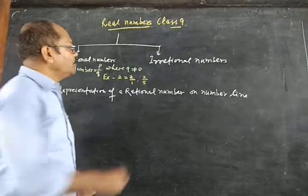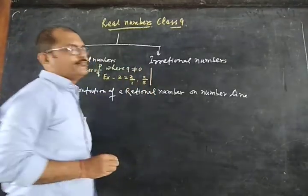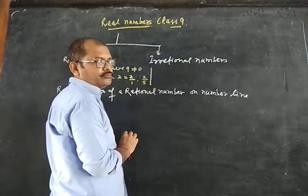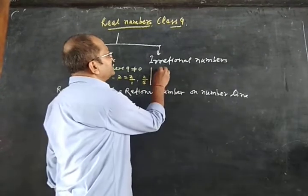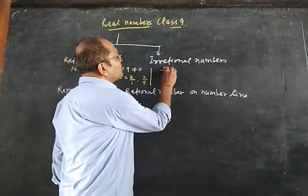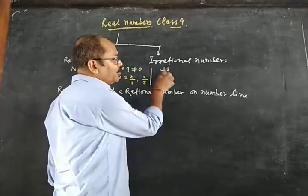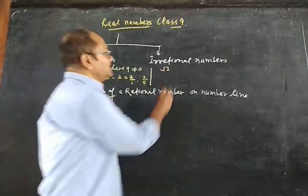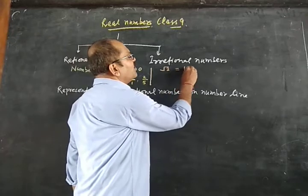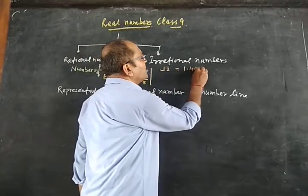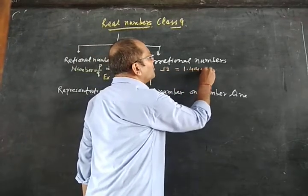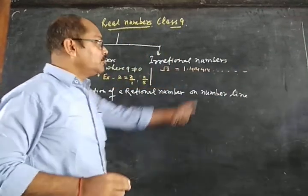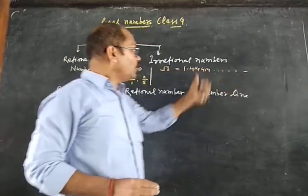Now next we will discuss irrational numbers. A number which cannot be written in the form of p/q — such as the square root of 2. When we find the square root of 2, the value will be 1.4142... it does not terminate. So it cannot be written in p/q form.